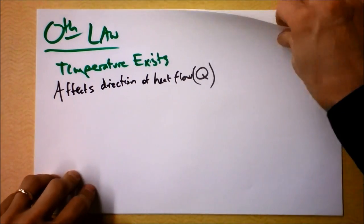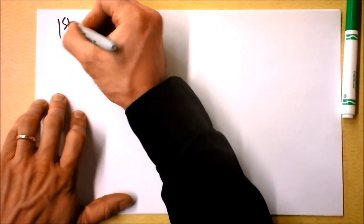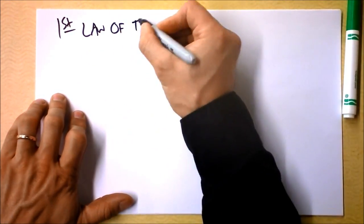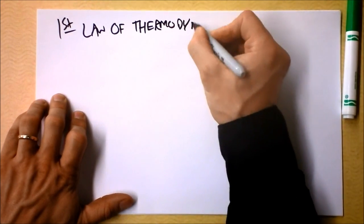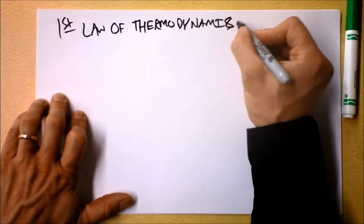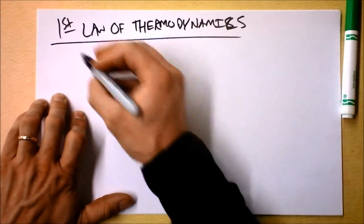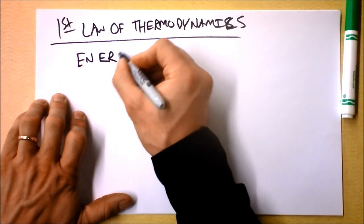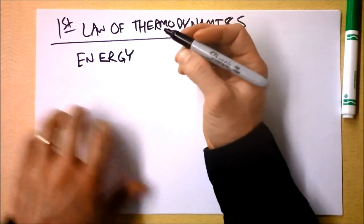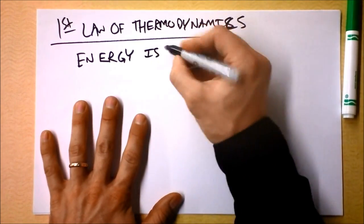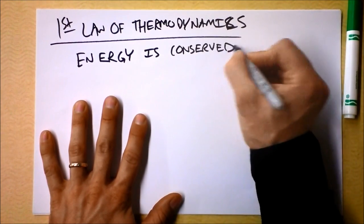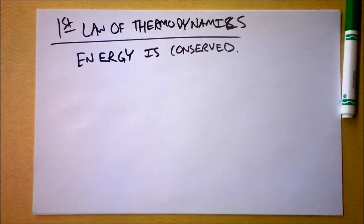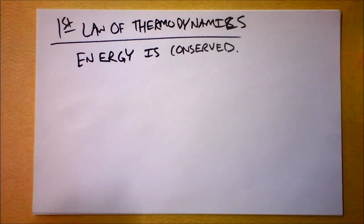The first law of thermodynamics is this: energy is conserved. Hey, look at these laws. Temperature exists, energy is conserved. Fancy. Of course, it's a very specific law having to do with gases and changing state or something.